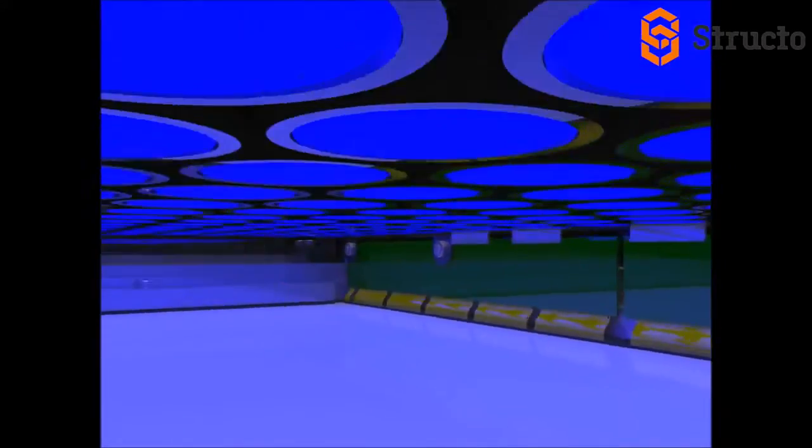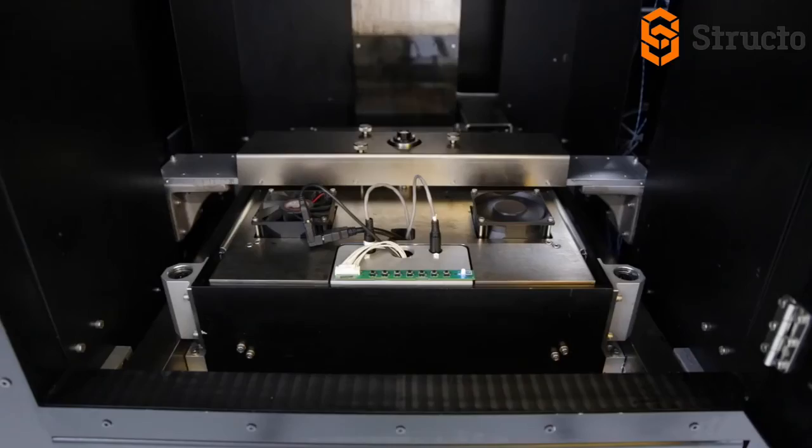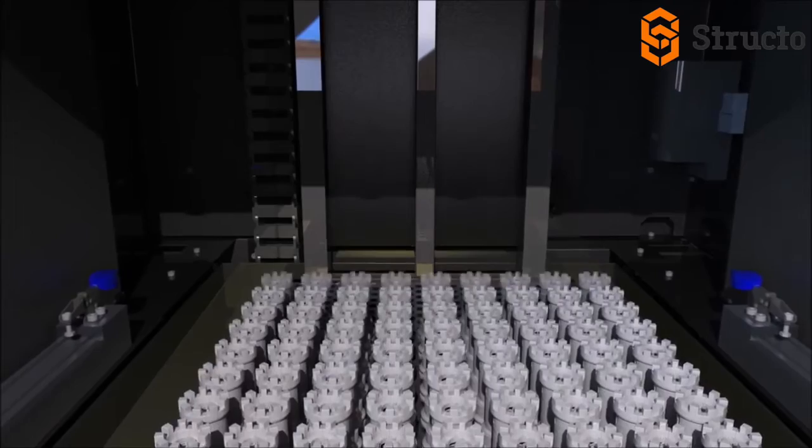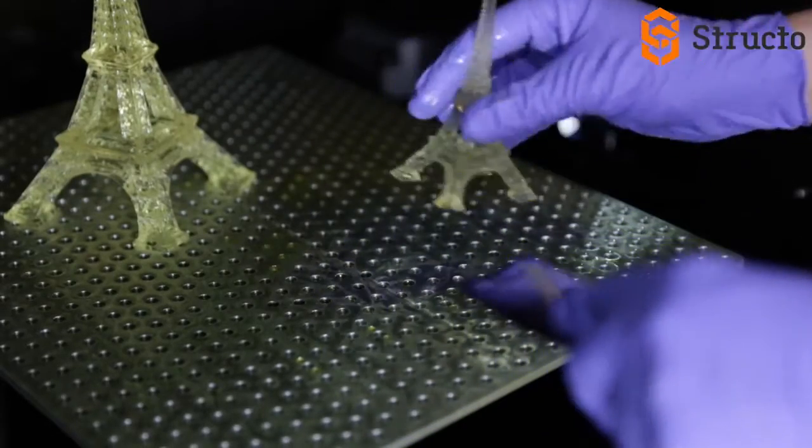Structo's technology utilizes an LED array light source and a liquid crystal film mask to control which regions in the printing plane are illuminated by the light source. This process allows all features in a given layer to be cured in a single exposure, regardless of the complexity, size or number of objects on the build tray.